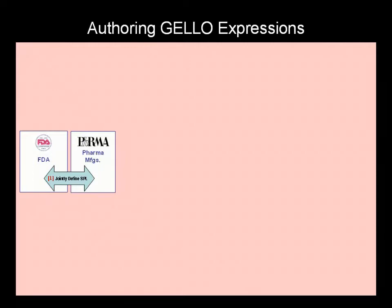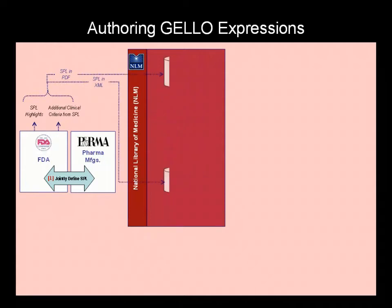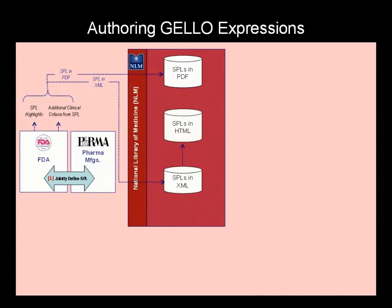Today, the FDA and pharmaceutical manufacturers jointly develop the Structured Product Label, or SPL, including a highlights section which draws attention to the portions of the label that are considered to be the most clinically relevant. An facsimile version of the SPL is posted for public use through the National Library of Medicine's Daily Med website, which publishes the drug label in HTML and provides a link back to the FDA's repository of the official version in PDF format.